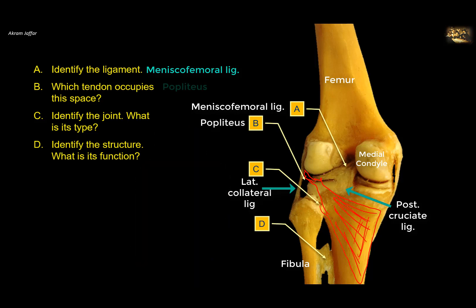The popliteus muscle is the muscle that unlocks the locked knee. During locking of the knee joint there is medial rotation of the femur on the tibia, so this muscle will cause lateral rotation of the femur on the tibia as it pulls in this direction, and this will result in unlocking of the knee joint prior to flexion of the knee.